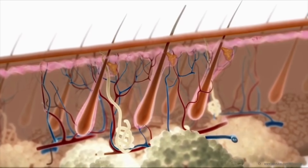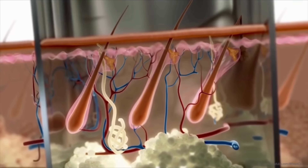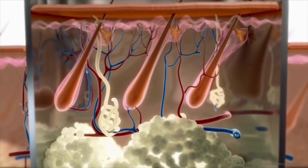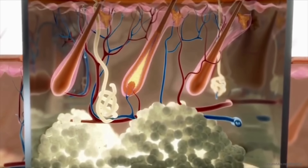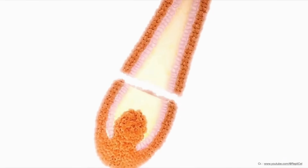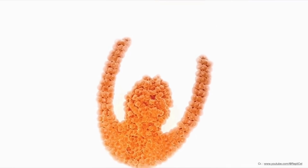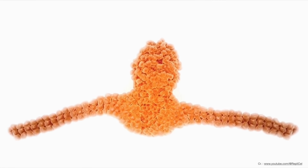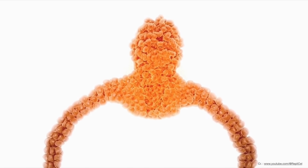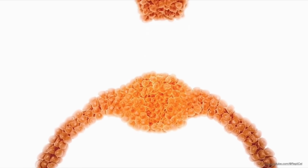First, a punch biopsy is used to isolate healthy hair follicles from the scalp of a patient. Hair follicles are then dissected, leaving the hair's root. The dermal sheath cup which surrounds the root is inverted to reveal the dermal papilla, which is then discarded.